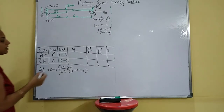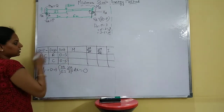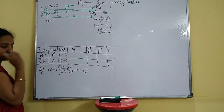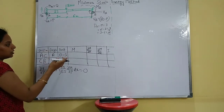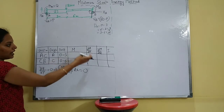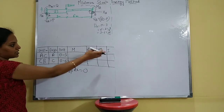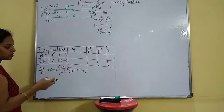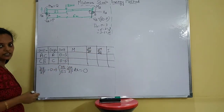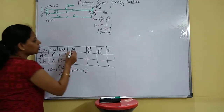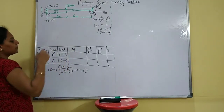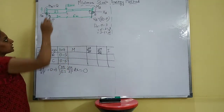Once this is done, the next step is to find out the bending moment and differentiate it. Finally, substitute in the formula and get the value of P and Q. So first step: find out the bending moment.